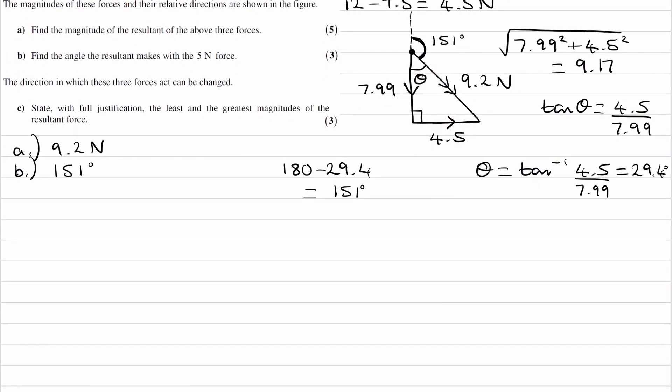And then finally for part C, state with full justification the least and greatest magnitudes of the resultant force. So to find the resultant force, we have to, let's say this is our start point, we have to draw all of the forces from head to tail. Now it's saying in this part that the direction in which these forces act can be changed, so I'm just going to give the three forces some random directions.